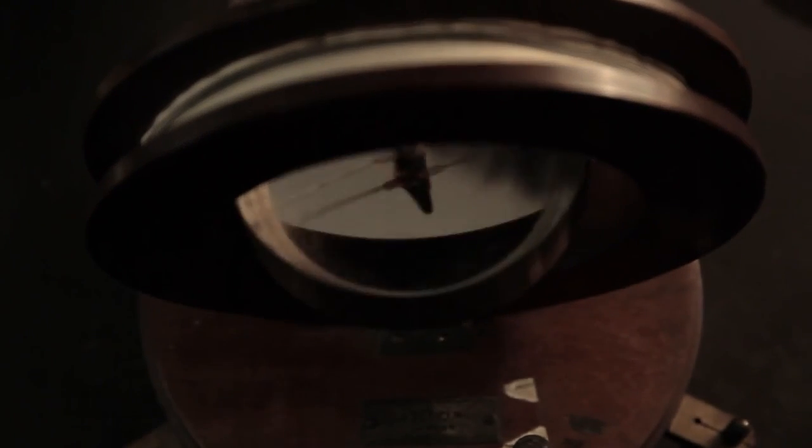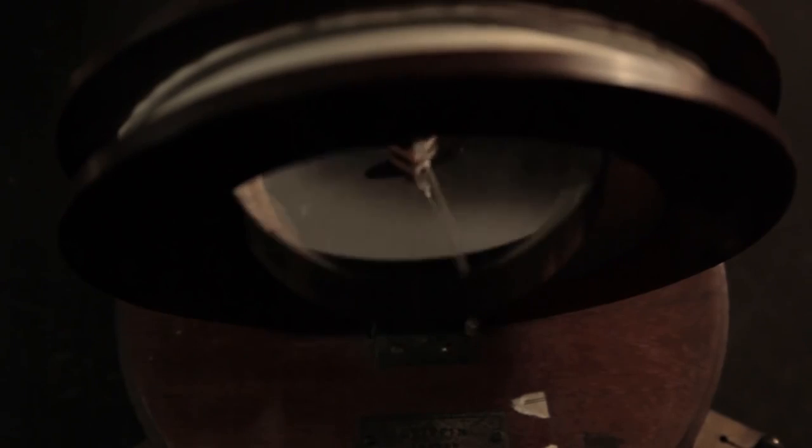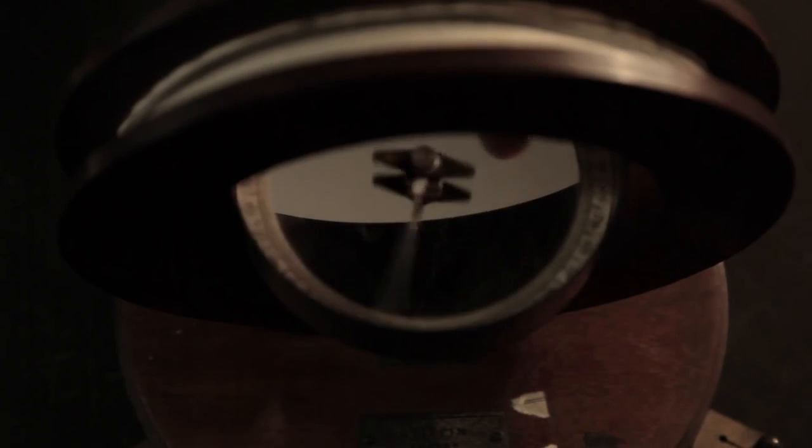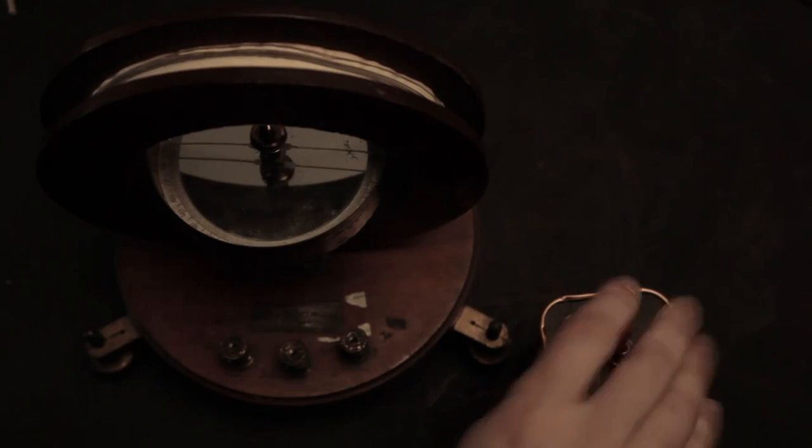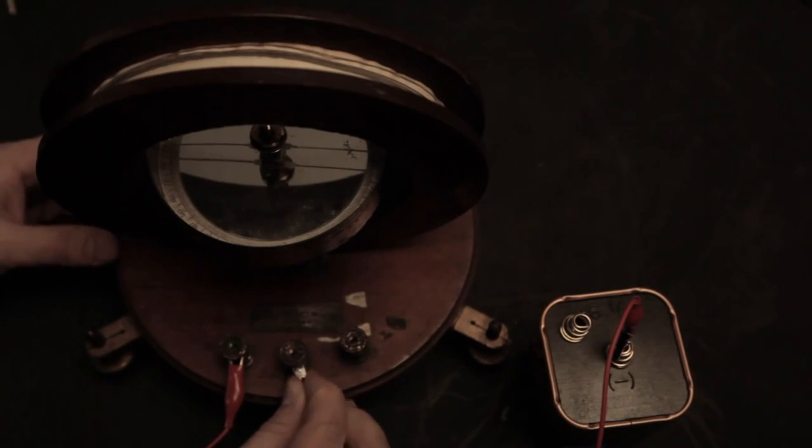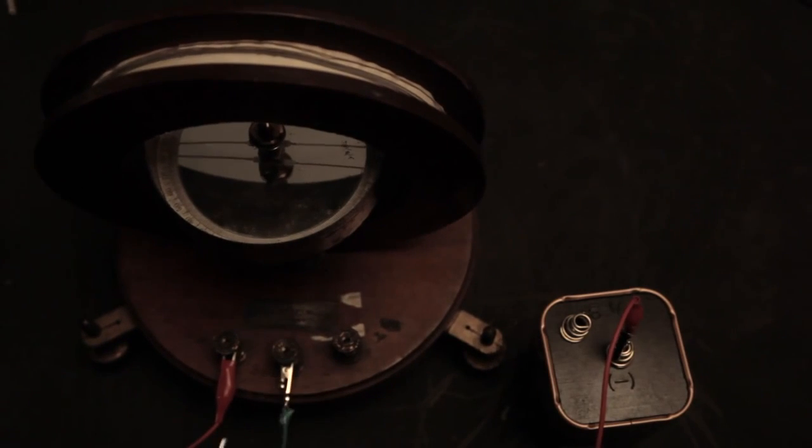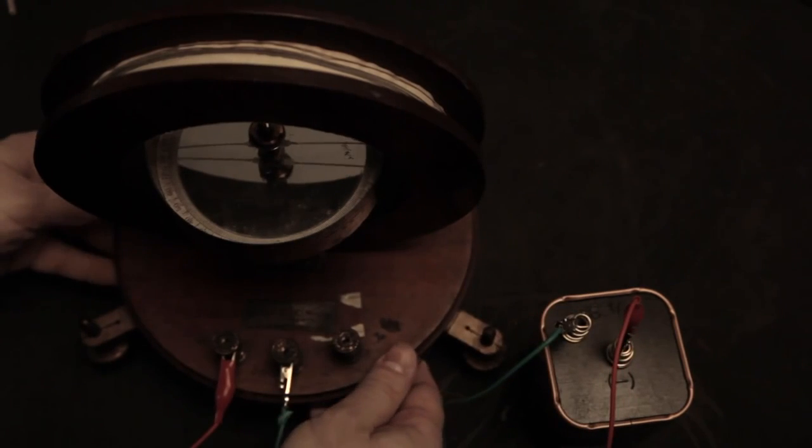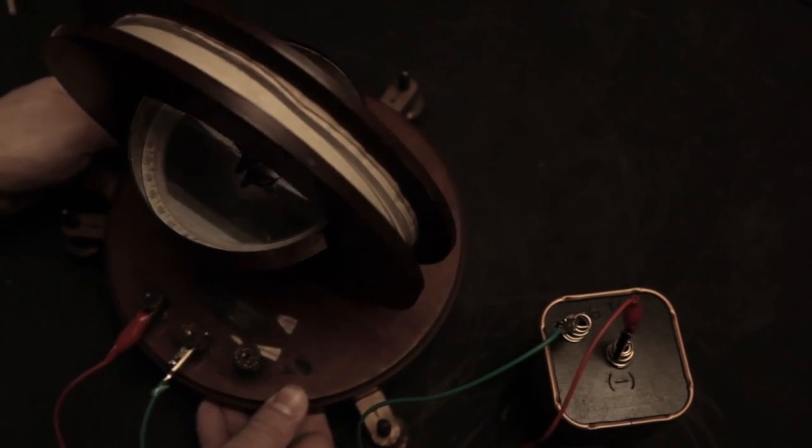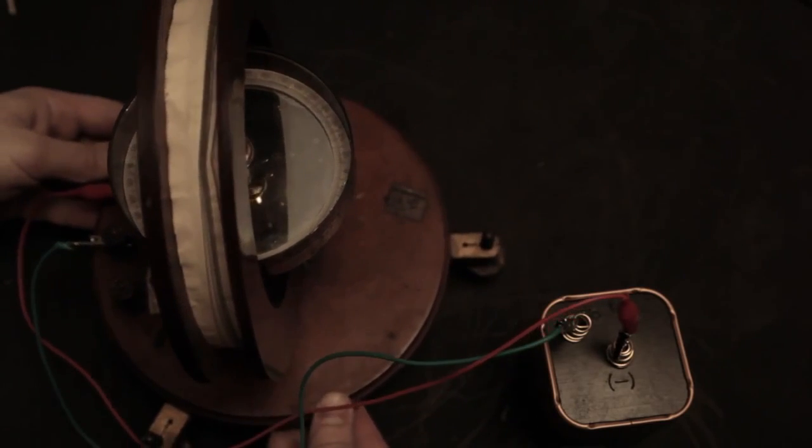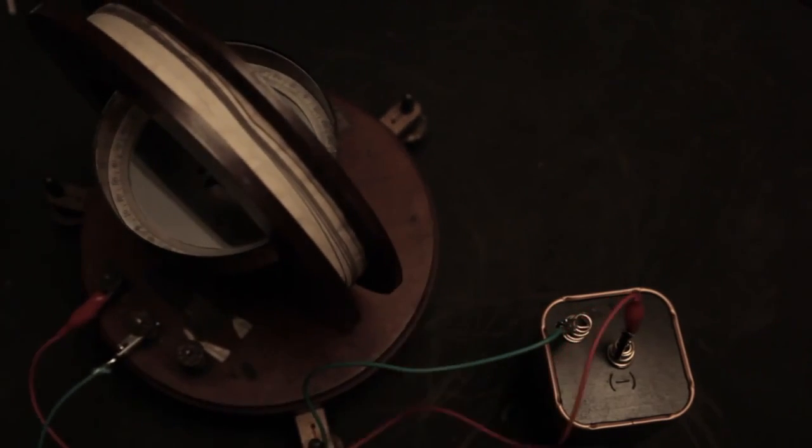This led to the galvanometer, which was designed to detect and measure electrical current. And it was just simply a coil of wire with a compass suspended in the center. Now when electric current was applied to the coil, a magnetic field would push through the middle of the coil and around the outside. So the needle would always point perpendicular to the direction of the force, which was balanced on either side of the needle.